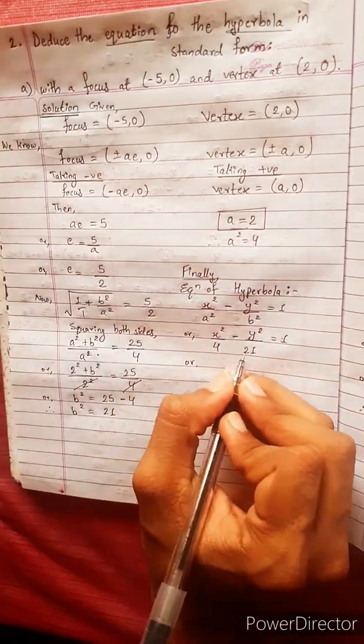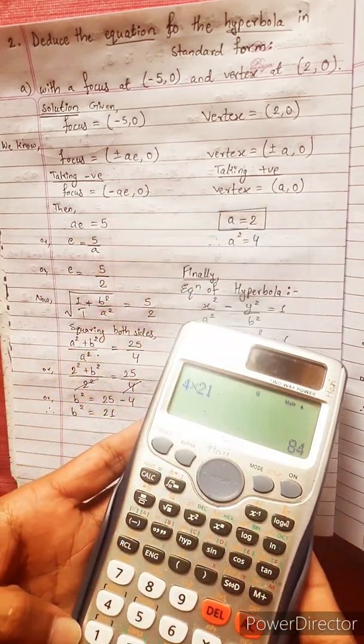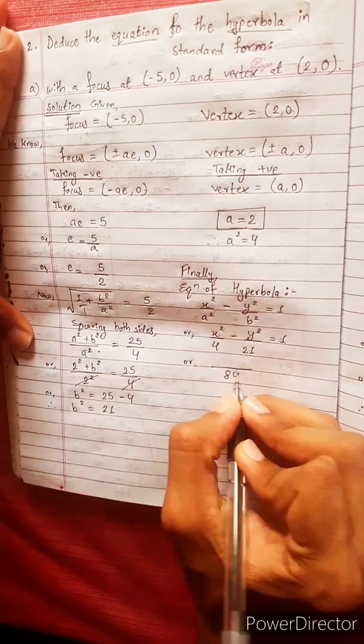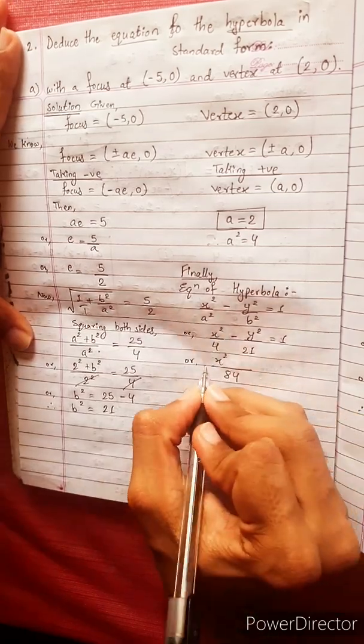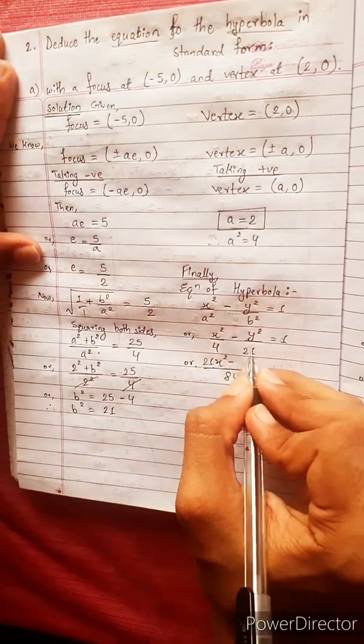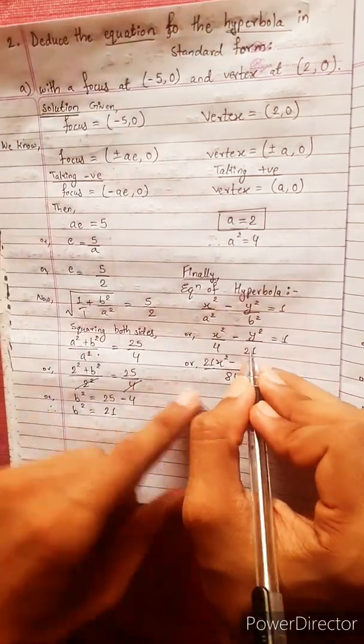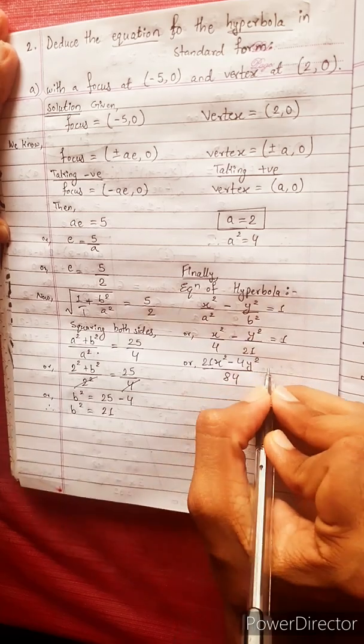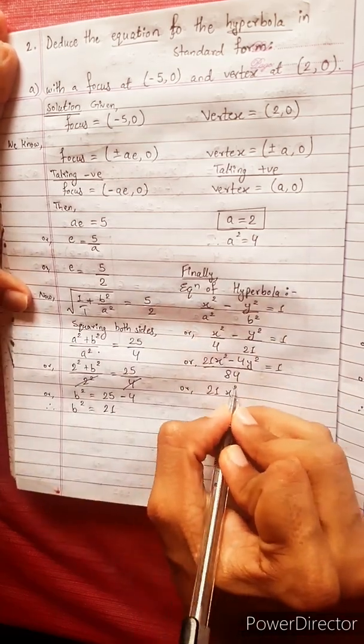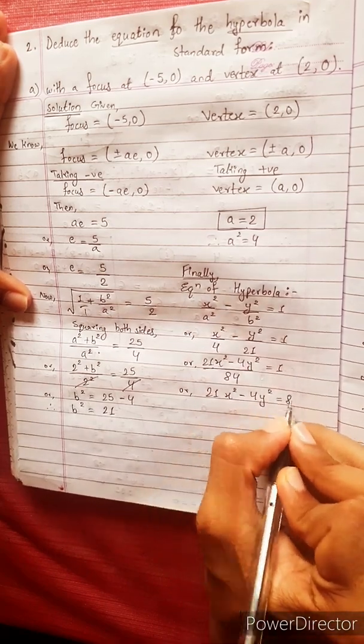Or 4 into 21 equals to 84. 84 divided by 4 is 21. 84 divided by 21 is 4. Or 21x square minus 4y square equals to 84.